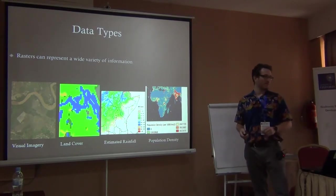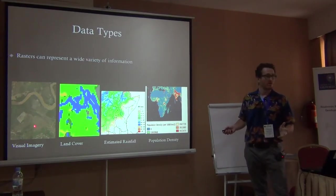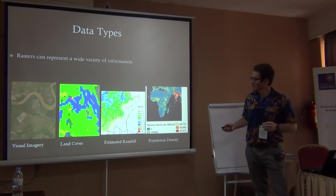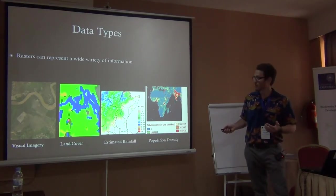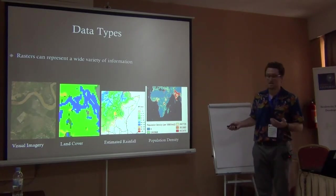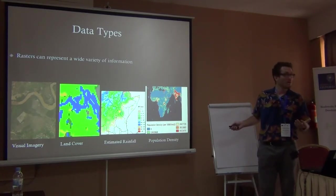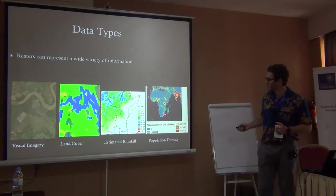Here's a raster as a visual photo image of the earth. The same patch of earth can be shown as a categorical raster: river, cropland, forest, village. Or it can represent estimated rainfall in millimeters per year across part of Africa — another raster. Or population density in people per 1,000 per square kilometer.